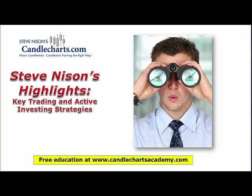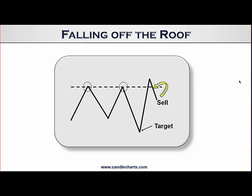We're going to look at one of my favorite techniques. It's actually based on a Western strategy, and the idea is that once the market breaks above resistance, it's up to the bulls to keep the new highs in place. And if the old resistance fails to hold — in other words, the market gets back below the old resistance area — I nicknamed this 'falling off the roof.' The reason I call it that is because there's a Japanese saying: let him climb the roof and then take away the ladder.